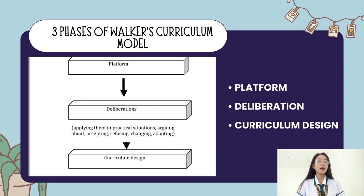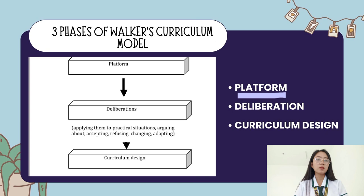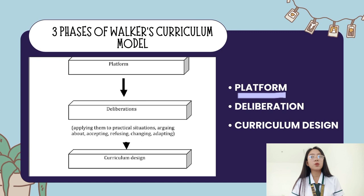In the platform phase, the curriculum workers share their respective beliefs, theories, conceptions, point of view, aims, and objectives. In this phase, curriculum workers commonly present their ideas on how the curriculum should be implemented. This is also the phase wherein curriculum workers discuss who will be the target learners and provide theories that will support the implementation of the curriculum. It will also answer the question of why the curriculum should be implemented, and they will have a vision of the purpose of the curriculum. For instance, in the K-12 curriculum, its purpose is to prepare students to become competitive for globalization.